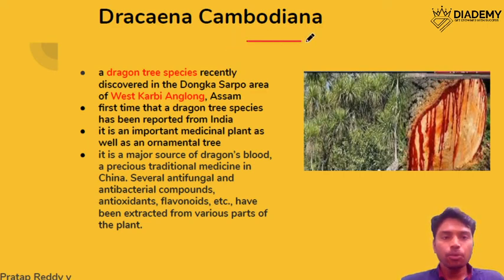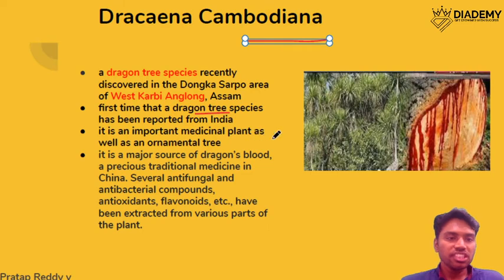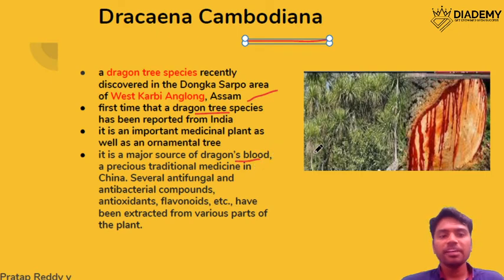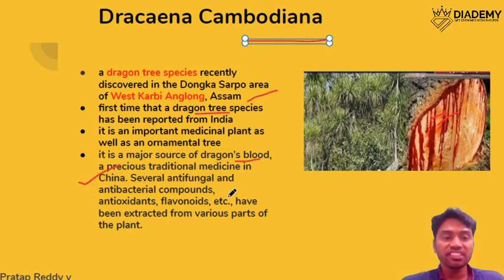Dracaena cambodiana is in news because India has this dragon tree species for the first time. It is found in West Karbi Anglong, Assam. When you cut its bark, you get a particular juice — it is known as dragon's blood. It has medicinal properties including antifungal, antibacterial, and antioxidant qualities, making it highly demanded in markets like China.